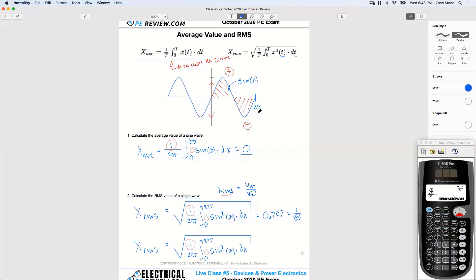So 2 pi in radians is the same thing as 360 degrees. So now I'm going to replace my period in radians with 360 degrees.